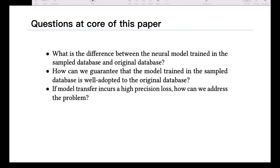More specifically, we want to ask these three questions. What if we don't train our policy model or Q function model on the original database, because we cannot afford that? What if we only sample a database from the original one? What would be the difference between them? Second, how can we guarantee that the model trained on the much smaller sampled database is well adapted to the original database? And last, what if we perform model transfer and that incurs very high precision loss because of noises or prediction distribution drift in the sampling procedure? How can we address that problem?